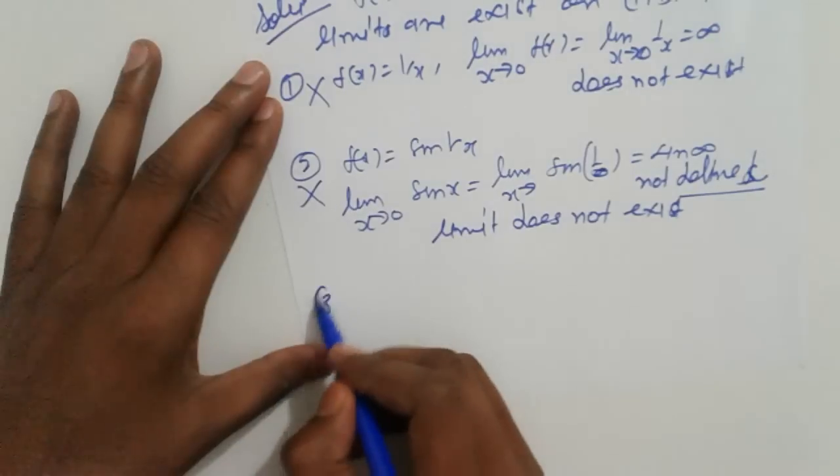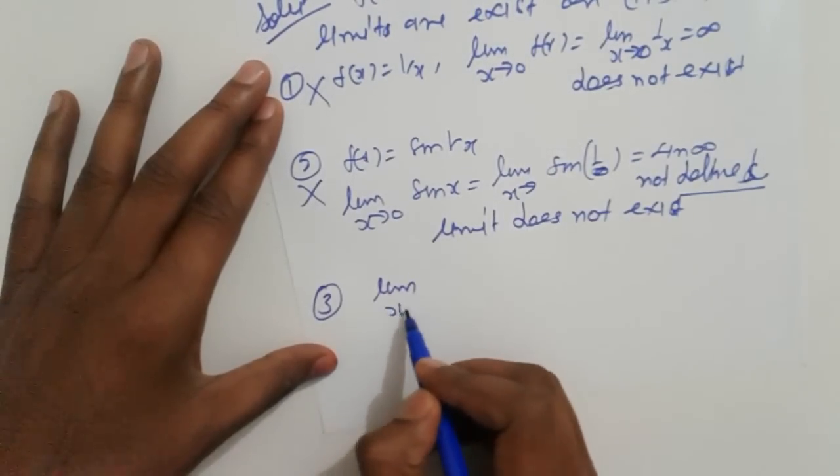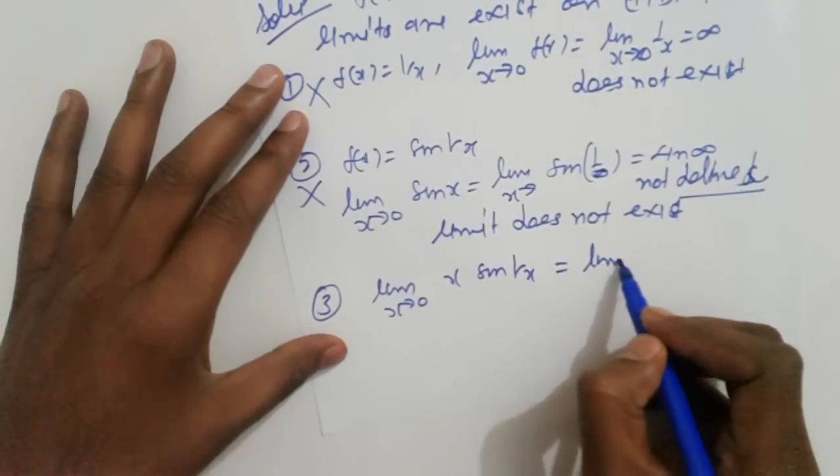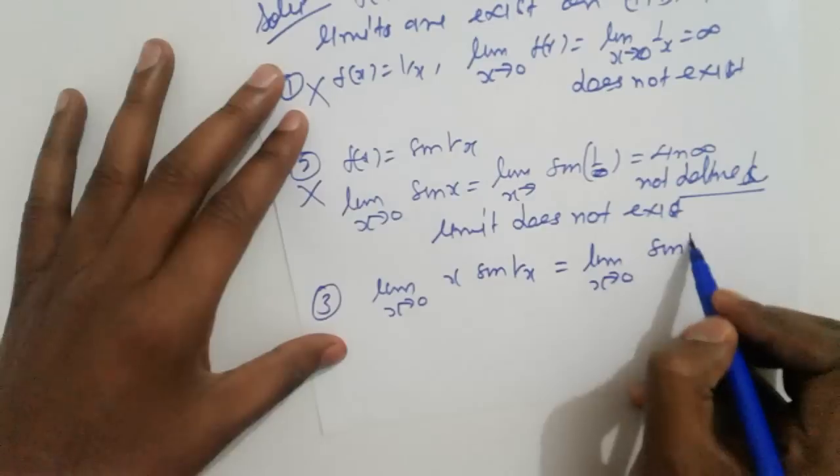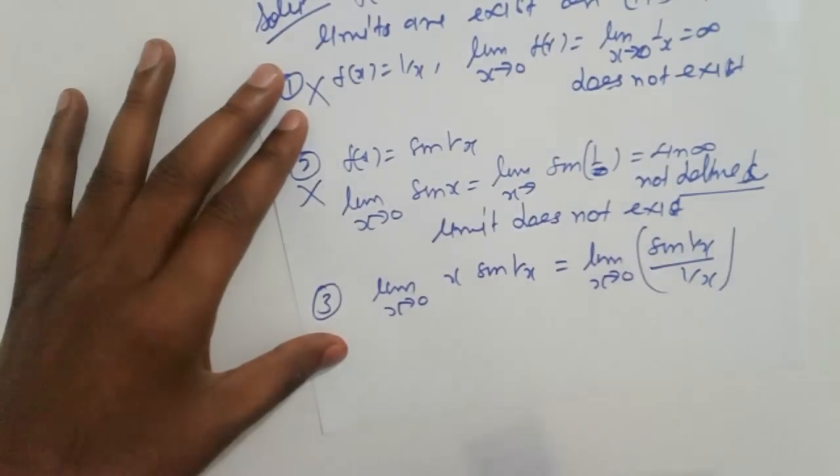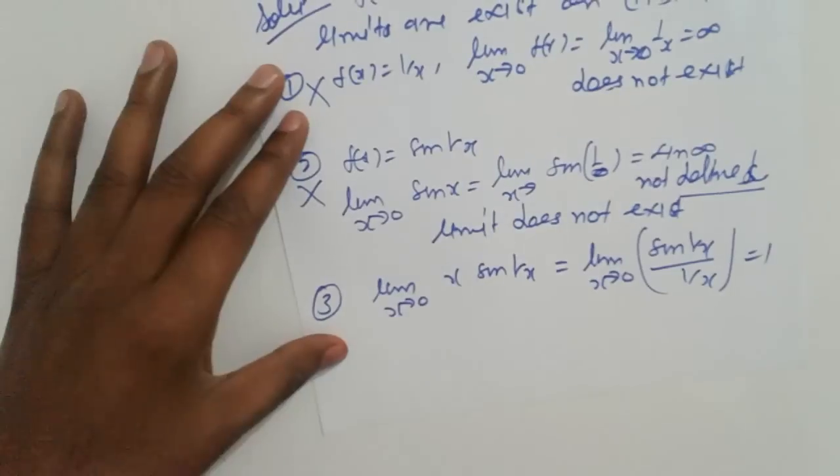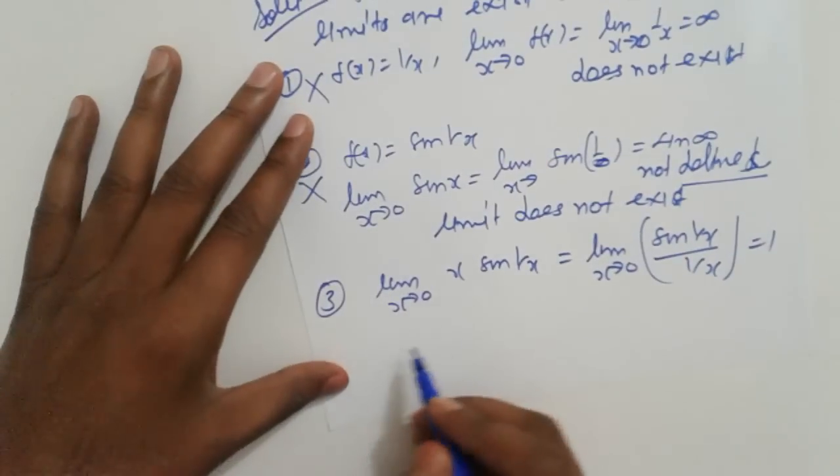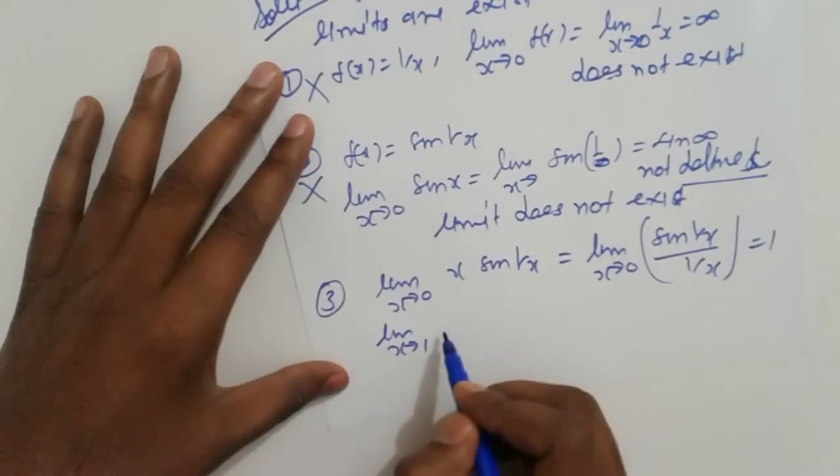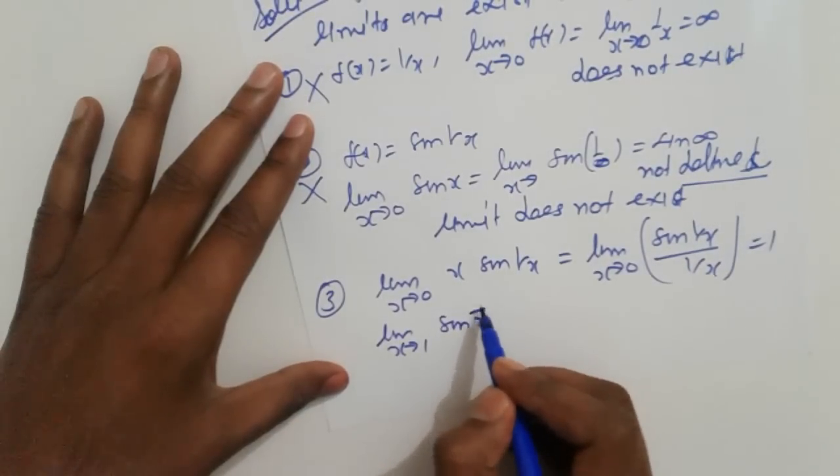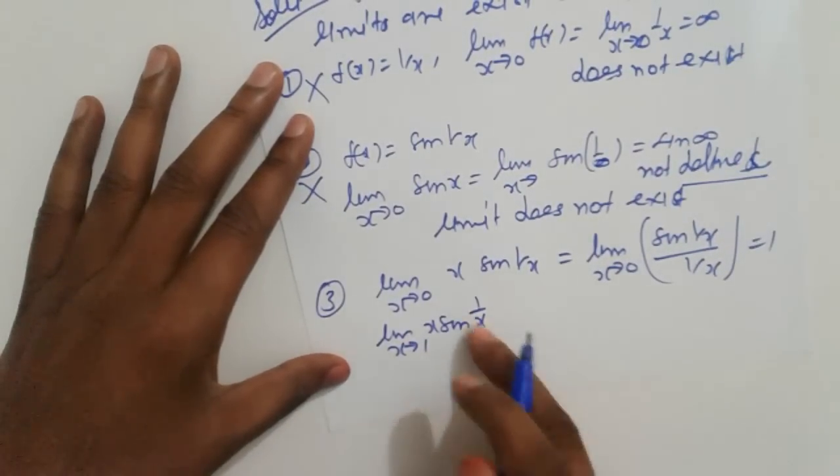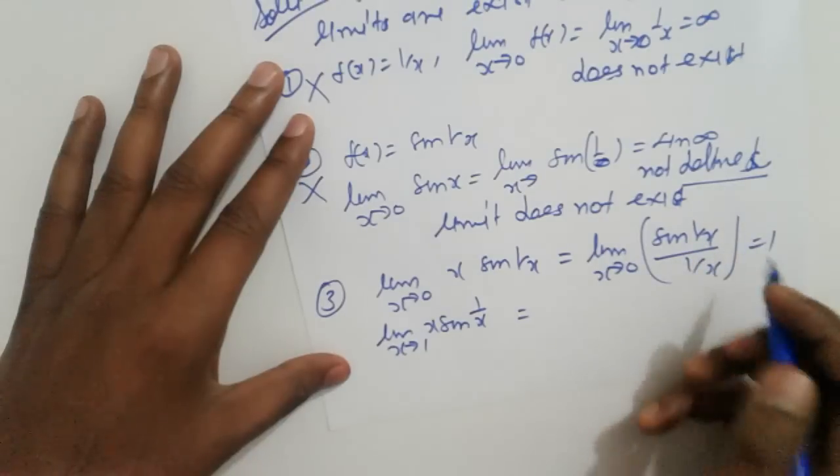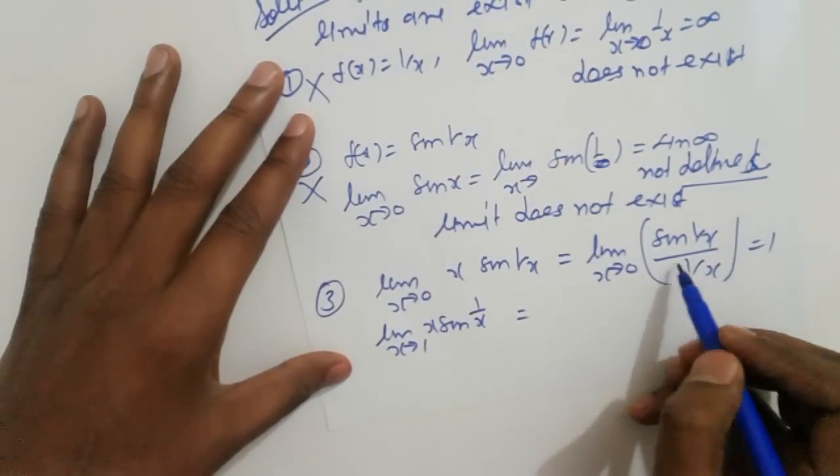Go to the third and fourth options. Limit as x tends to 0 of x·sin(1/x). So it can be written as limit x tending to 0 of sin(1/x)/(1/x). So we get 1, using the property that sin(x)/x equals 1. So the limit exists. Again, the limit as x tends to 1 of x·sin(1/x) - so sin(1) times something - which is the oscillating function.